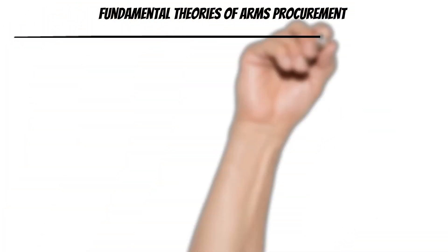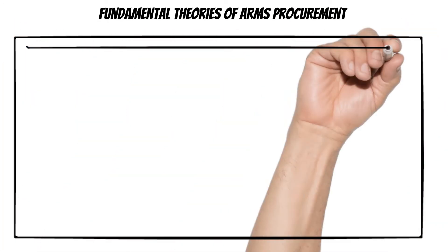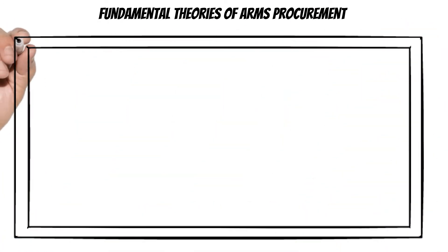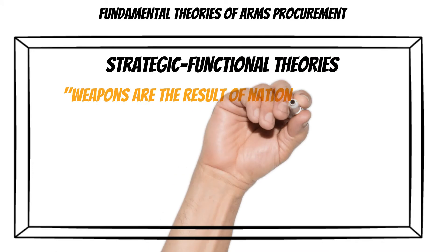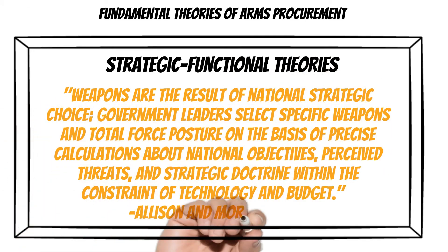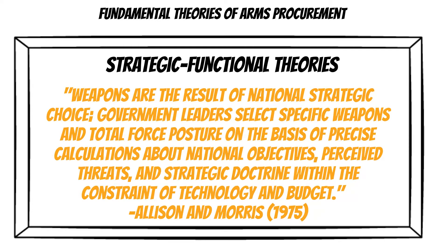The most succinct explanation comes from Alice and Morris in their 1975 book, where they say that weapons are the result of national strategic choice. Government leaders select specific weapons and total force posture on the basis of precise calculations about national objectives, perceived threats, and strategic doctrine within the constraint of technology and budget. Basically, states buy arms because they feel a threat, and when they do, they make sure it fits within the budget. That sums up strategic functional theories — it's all nested around rational choice.